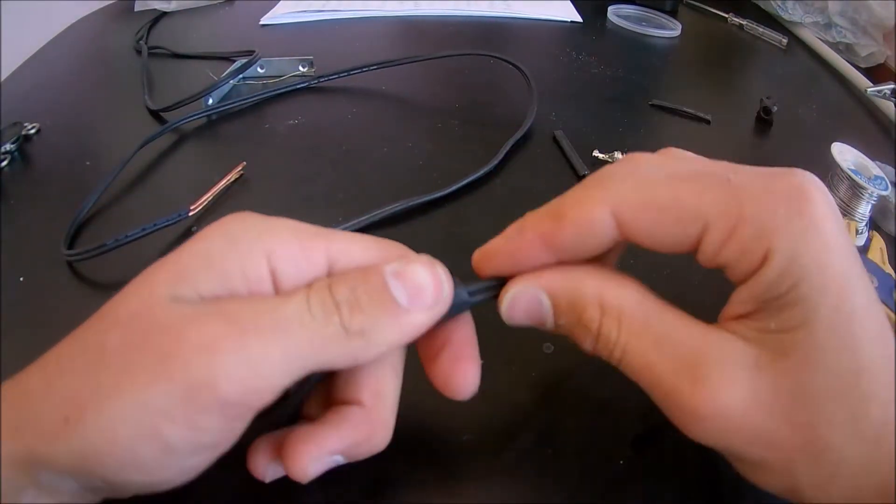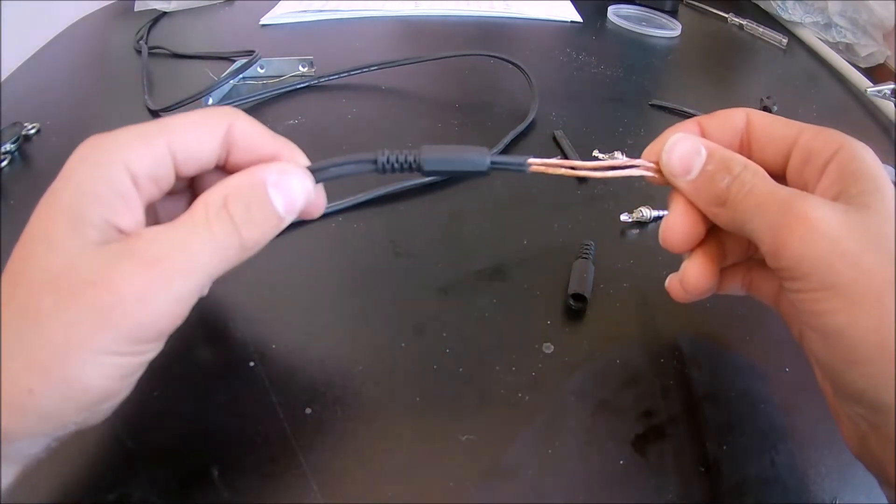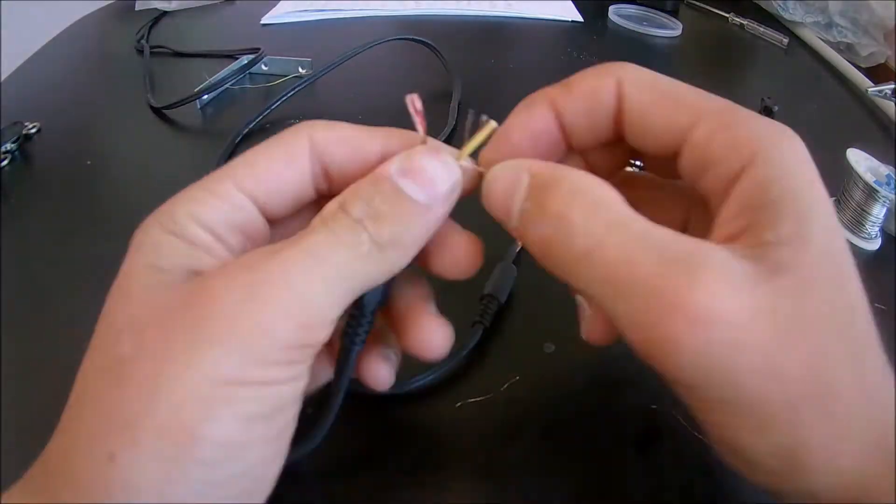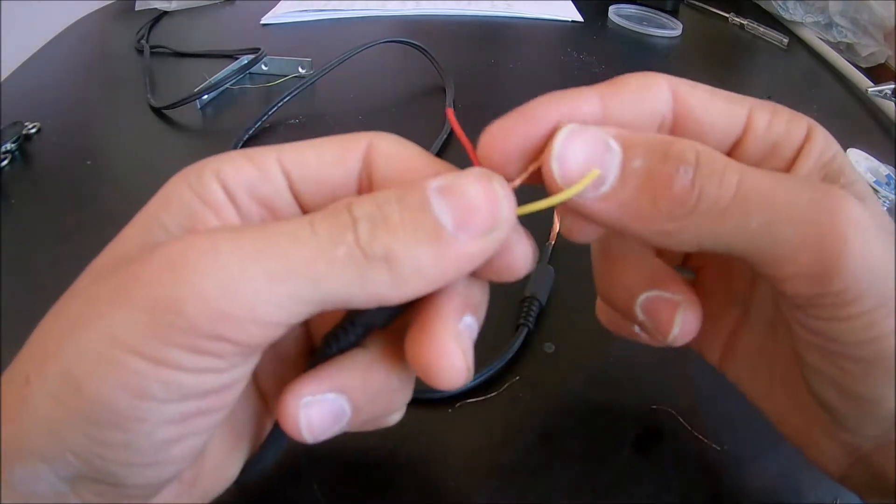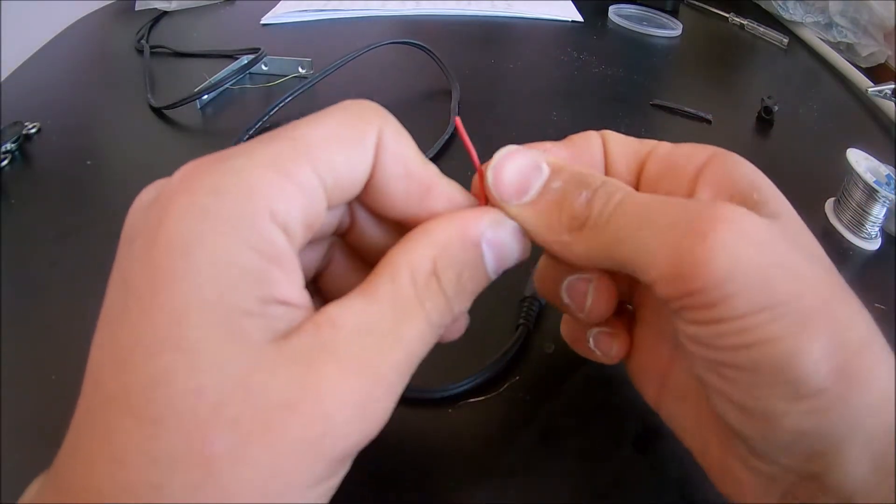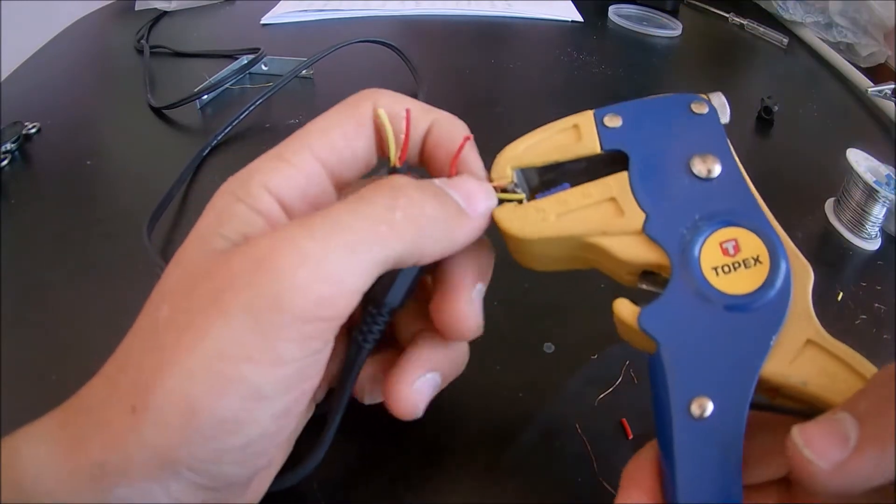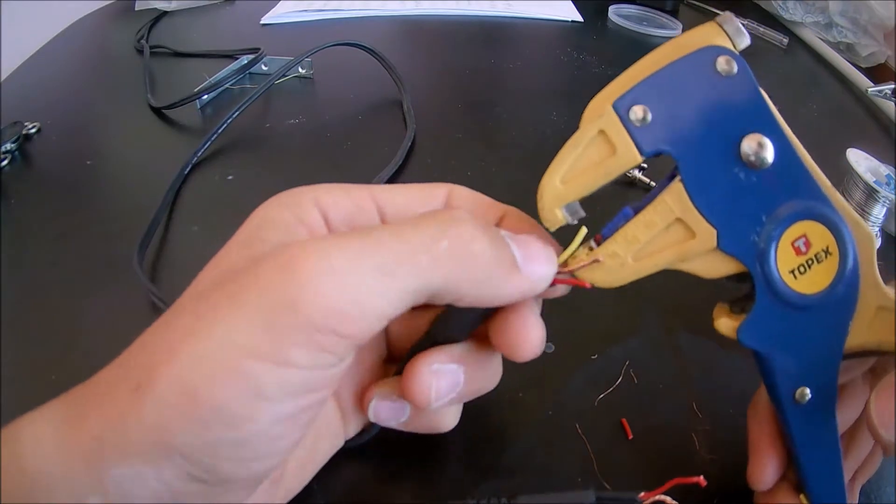After you have inserted them, separate the ground wire from the left and right wires, and then twist the ground wires together. Now, you are going to need to cut the wires to an approximate length of 3 centimeters, and then strip half a centimeter from the left and right wires.